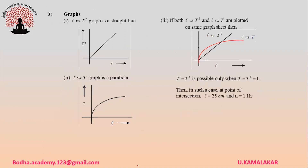The l versus T² graph is a straight line passing through the origin, while the l versus T graph is a parabola. If both are plotted on the same graph sheet, they will intersect at a point where T = 1 second, the length of the pendulum equals 25 centimeters, and the frequency of oscillation equals 1 hertz.